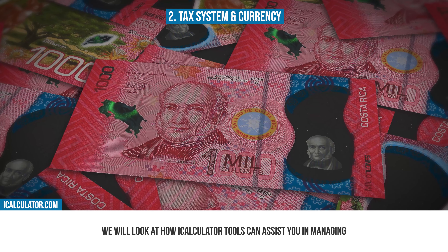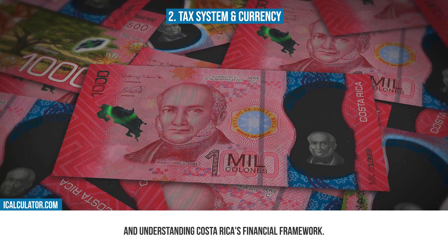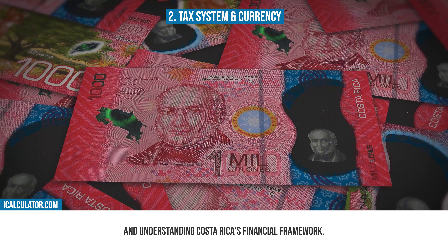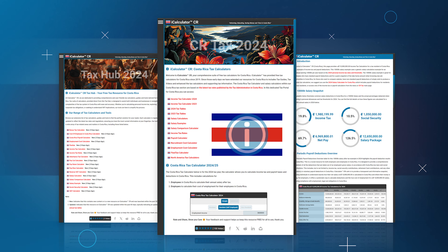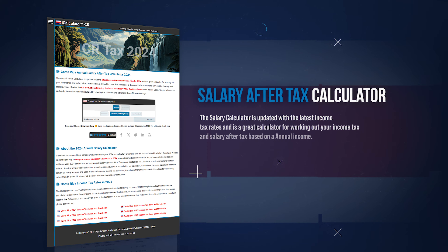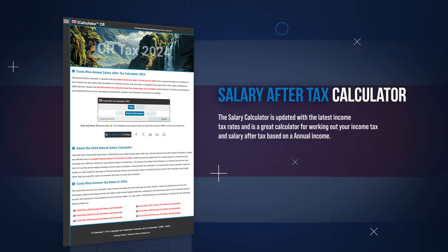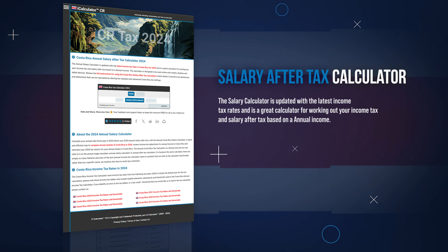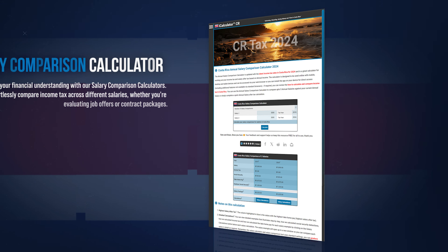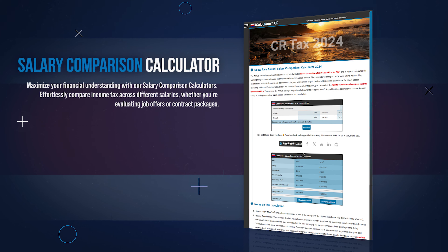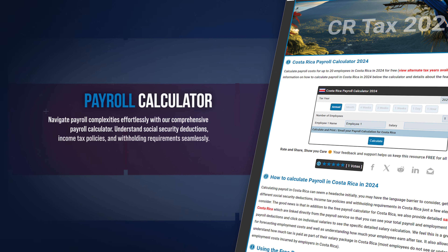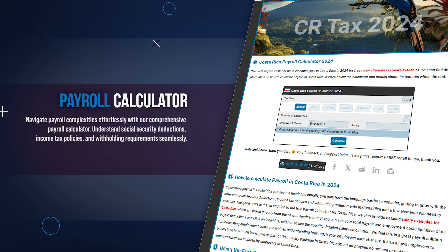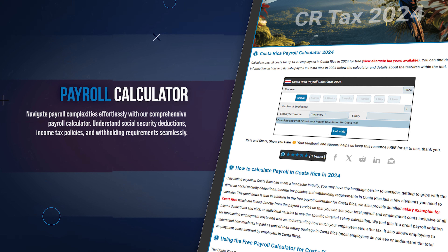Next, we will look at how iCalculator tools can assist you in managing and understanding Costa Rica's financial framework. iCalculator is home to a comprehensive suite of different tools to simplify and clarify your financial planning and decision making. You can start by understanding your take-home pay with our salary after tax calculator, which offers a clear view of your net income after all tax deductions. Compare different salaries with our salary comparison calculator, providing insights into where your earnings stand compared to previous years. Streamline your payroll process using our payroll calculator, which is crafted to assist in calculating salaries, taxes, and contributions for businesses.